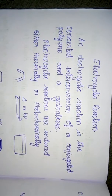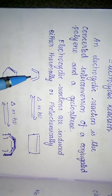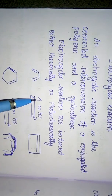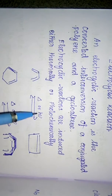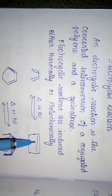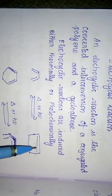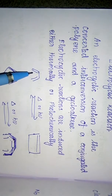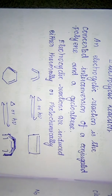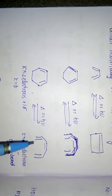Here is an example of an electrocyclic reaction. This is 1,3-butadiene, a 4π system. Under thermal or photochemical conditions it gives cyclobutene. Cyclobutene is a 4π system with one pi bond — it has only one pi system.